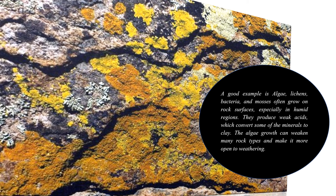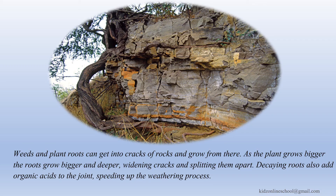Algae and other organisms produce weak acids which convert some of the minerals to clay. Algae growth can weaken many rock types and make them more open to weathering. Weeds and plants' roots can get into cracks of rocks and grow from there. As the plant grows bigger, the roots grow bigger and deeper, widening cracks and splitting them apart. Decaying roots also add organic acids to the joint, speeding up the weathering process.